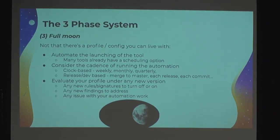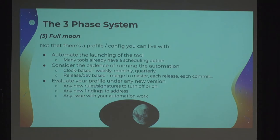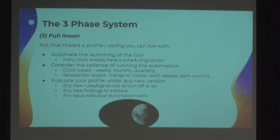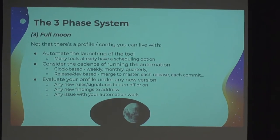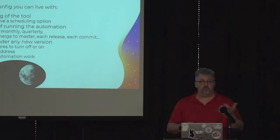At the full moon phase, you have a profile you can live with, the scanner is as tuned as you can get it, and you're ready to launch. Commercial tools and some open source ones have scheduling options — run weekly, daily, or at a specific time. Consider cadence: do you want clock-based scanning every week or month, or development-based scanning per release or commit? How quickly can you get from a commit to a testable artifact? And as new tool versions come out with new rules, there's some ongoing care and feeding to prevent your automation from drifting into noise.